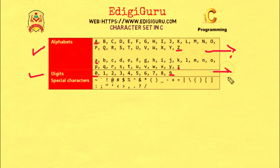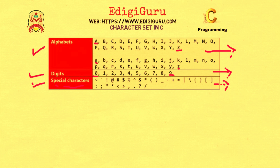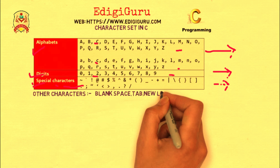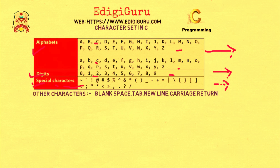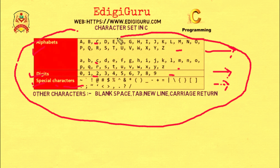Third and most important are special characters, such as at-sign, ampersand, percent, caret, square brackets, curly brackets, forward slash, backward slash — all those characters which you could see here could be used in C language. Apart from this, some other special characters such as blank space, tab, new line, and carriage return could also be used in C language. And all these together are called a character set.